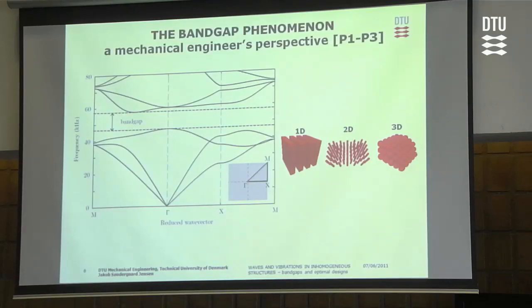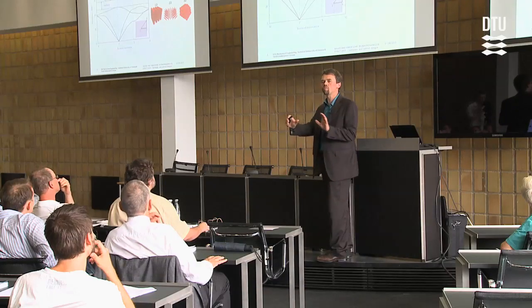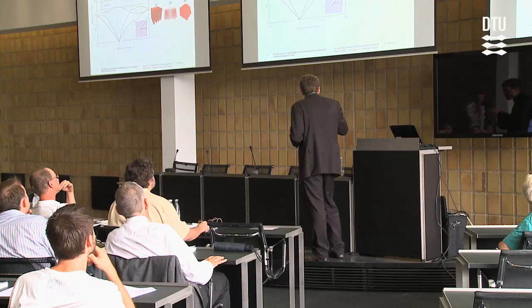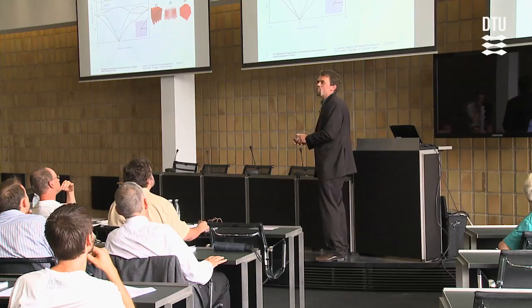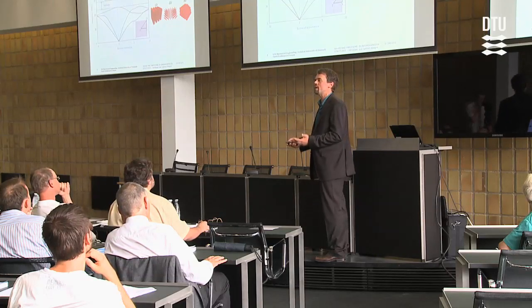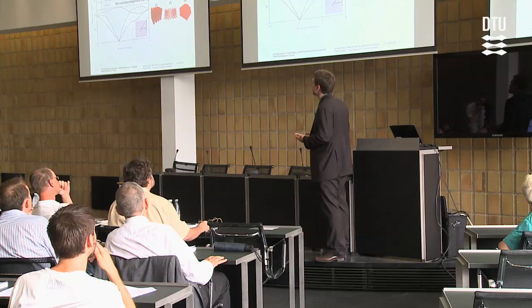In a band diagram, the x-axis represents the wavelength and wave direction combined, the y-axis represents the frequency of the wave, and each band represents a propagating mode. If we have regions where there are no bands, we have no waves that can propagate at those frequencies, meaning no wave propagation through an infinite periodic material.